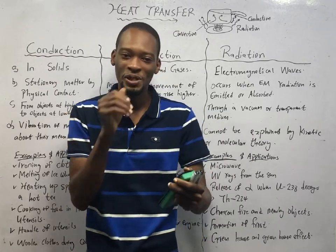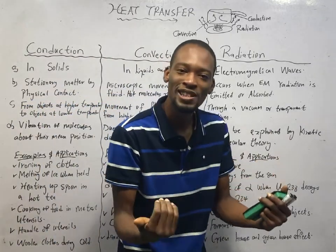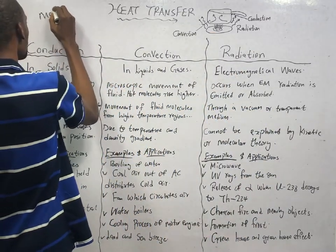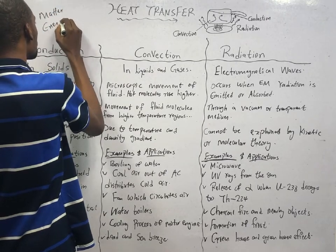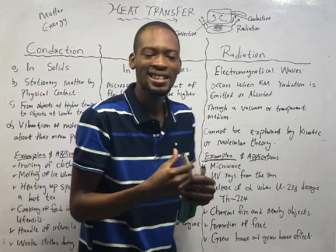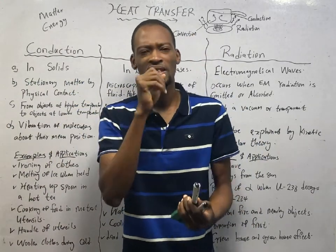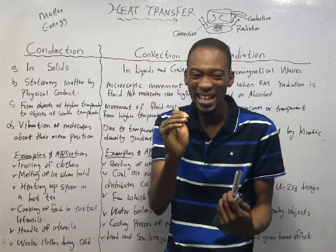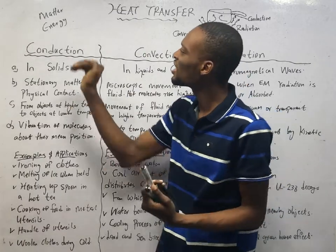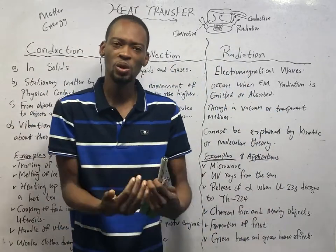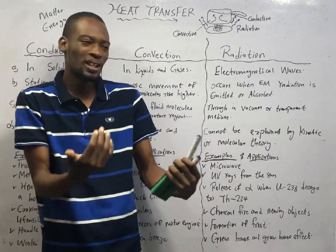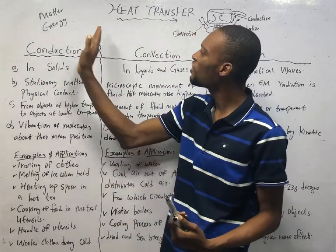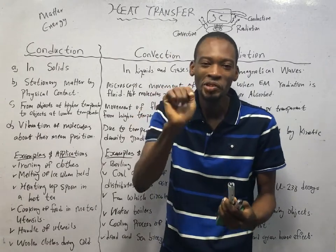Let us begin this way: physics is the study of matter in relation to energy — matter and energy is the concern of physics. Chemistry, on the other hand, is the study of the composition, properties and uses of matter. Chemistry is more focused on matter: what is matter composed of, what are the properties of matter, and what are the uses of matter. However, physics focuses on matter in relation to energy.